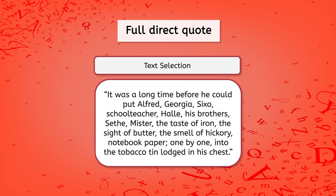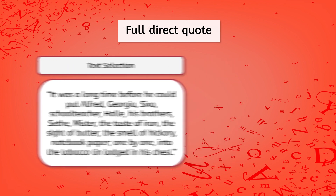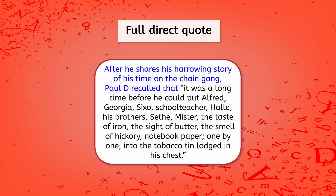For this reason, I'm going to use the full quote to really illustrate that to my reader. I wrote: 'After he shares his harrowing story of his time on the chain gang, Paul D recalled that it was a long time before he could put Alfred, Georgia, Sixo, schoolteacher, Hallie, his brothers, Sethe, Mr. — the taste of iron, the sight of butter, the smell of hickory, notebook paper — one by one into the tobacco tin in his chest.' Notice how in this example I am integrating the quote with my own introduction to it, so my reader knows what I am talking about before I dive in.